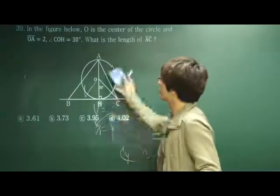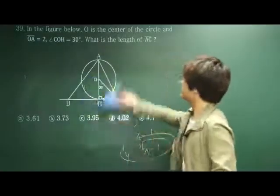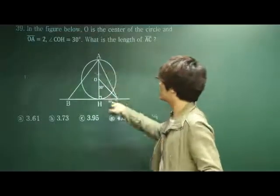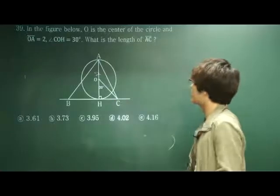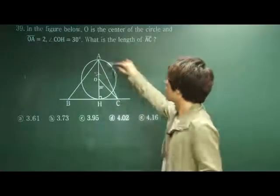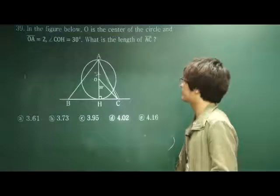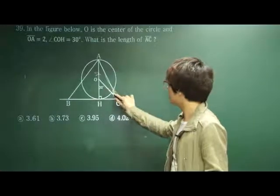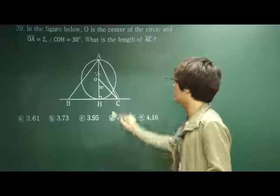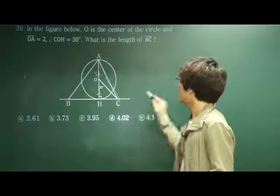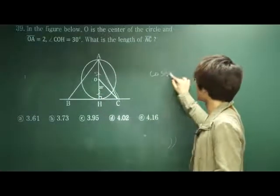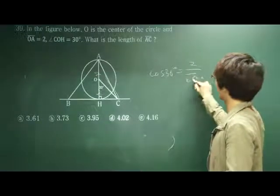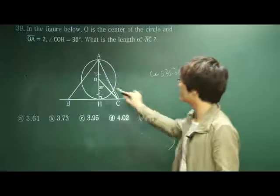Problem 39: In the figure below, O is the center of the circle and AO is 2. Angle COH is 30 degrees. What is the length of AC? To find out the length of AC, we've got to first know the length of OC. How do you find this out? By using cosine here. Cosine 30 degrees equals 2 over length of OC. Find this out first.